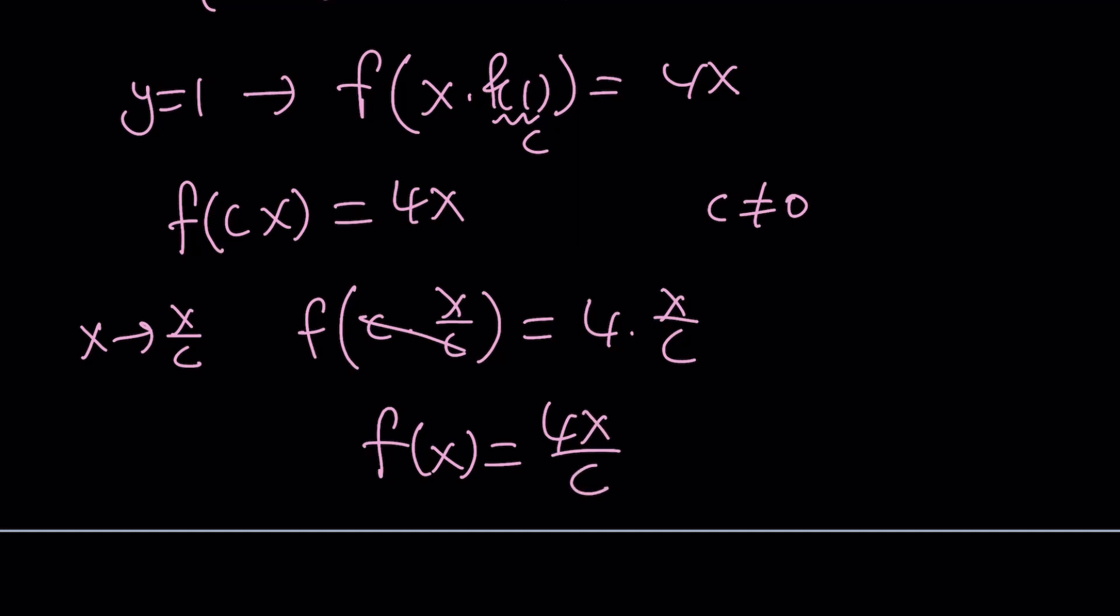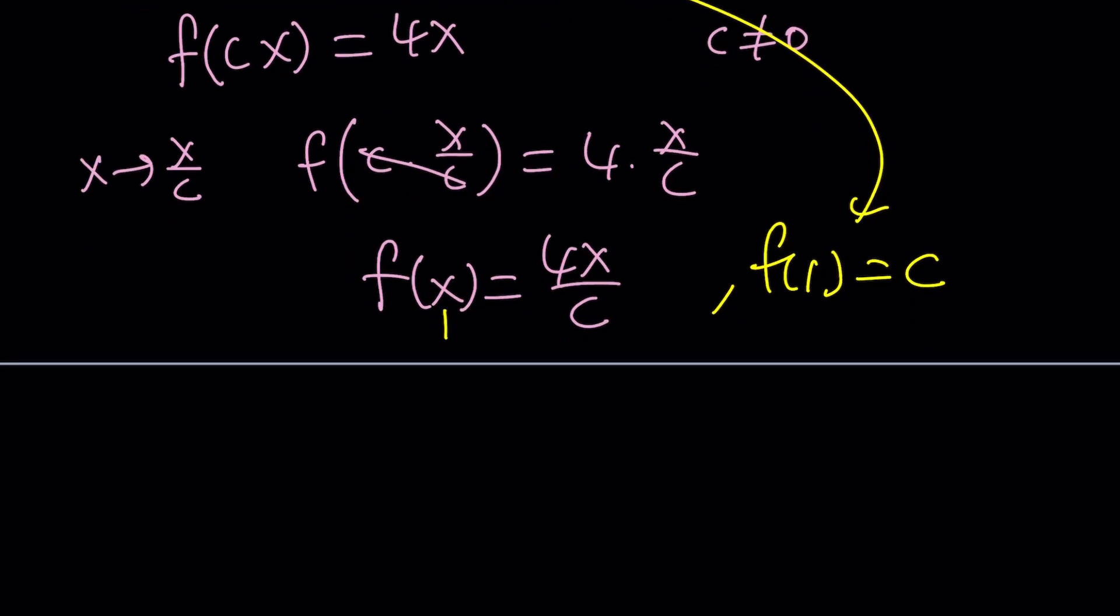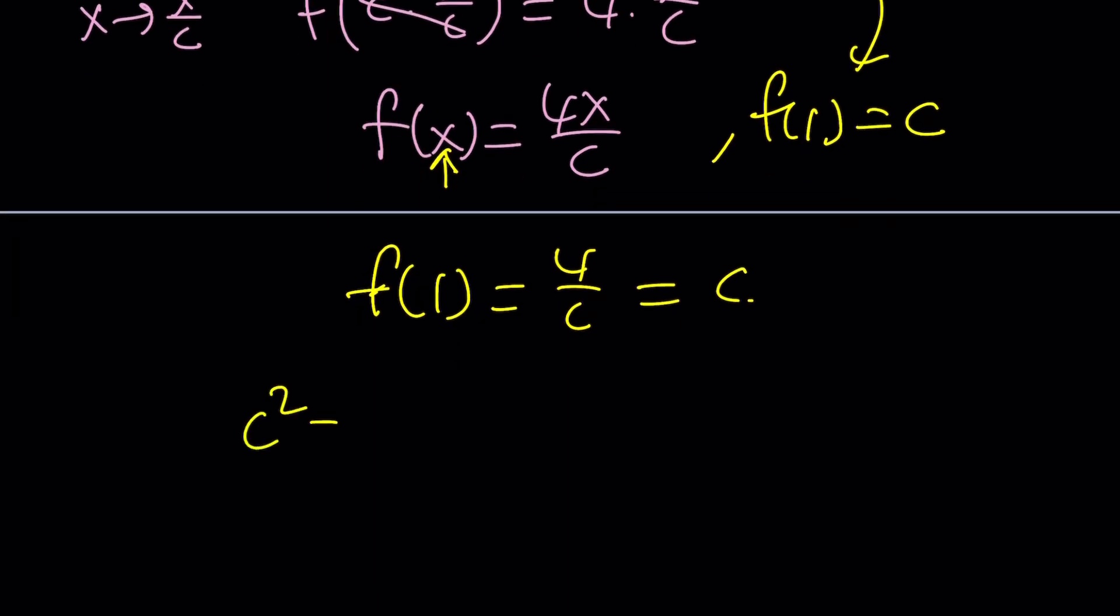Now how do I use this information? One thing that I know is f(1) is equal to c. Along with this I do know from here that f(1) is c. So let's replace x with 1. f(1) becomes 4 over c which is c. And this gives us c squared equals 4 which means c is 2 or negative 2.